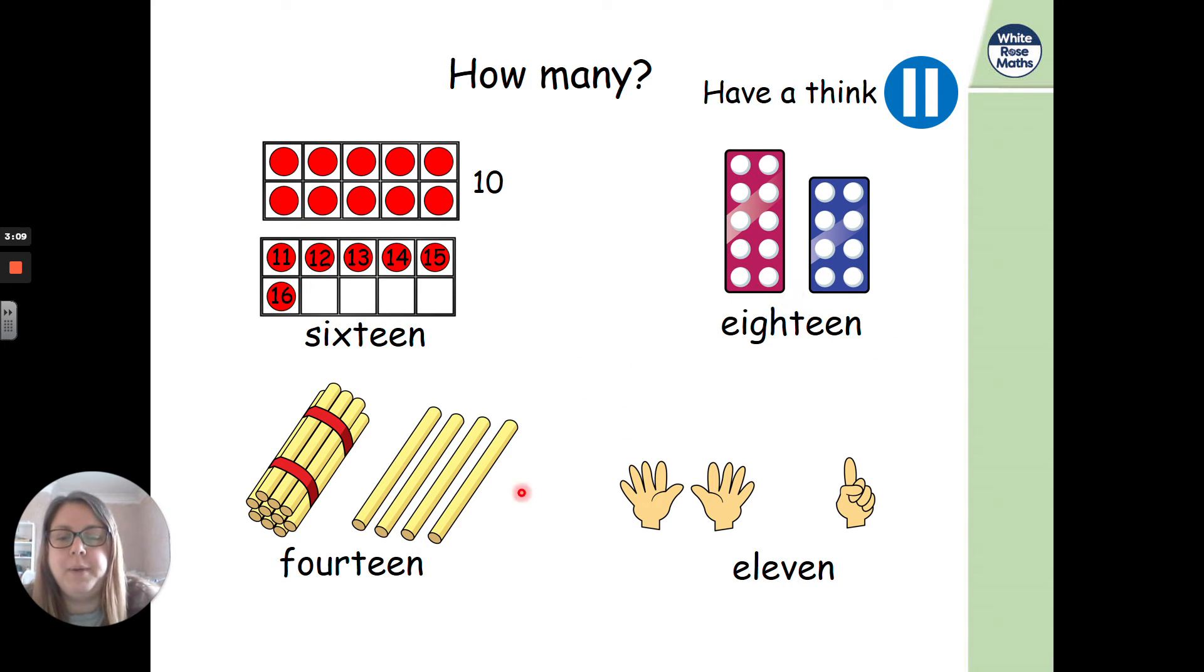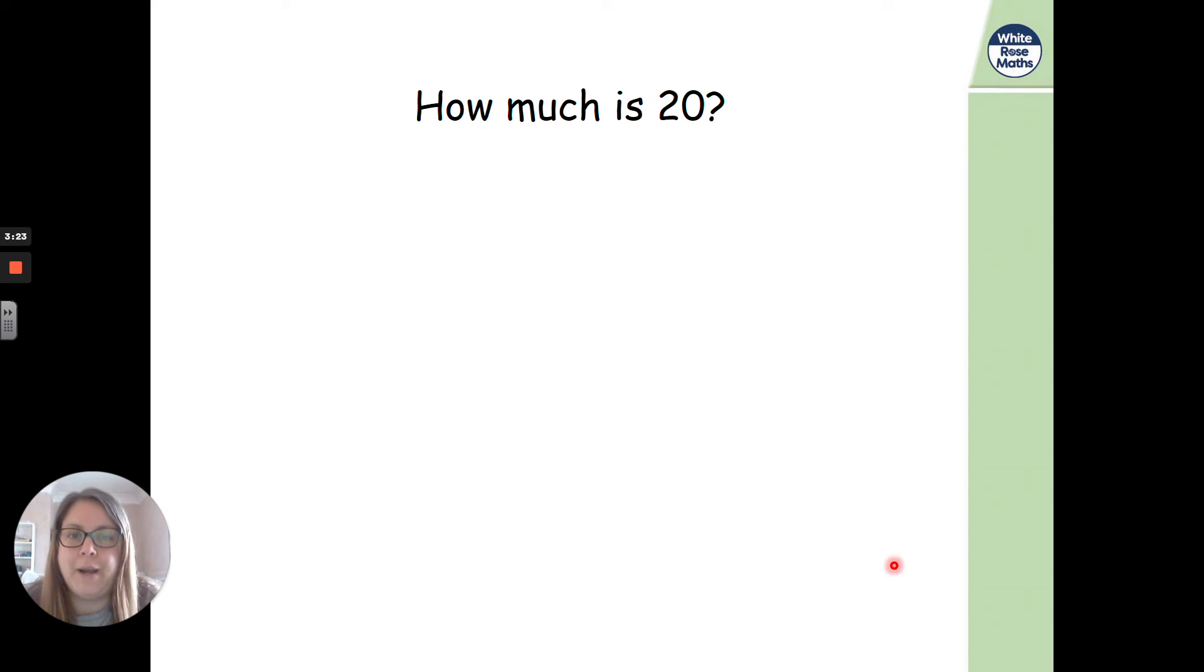So remember, our teen numbers are a little bit more straightforward because we know how to write the first part of the number because we've been doing lots of practice of that. And we add the teen on the end. It's 11, 12, and 20, which are our trickier ones. But give yourselves a big tick if you've got those right.